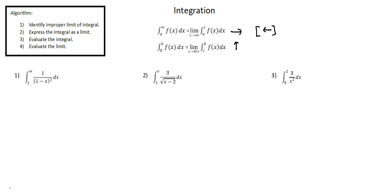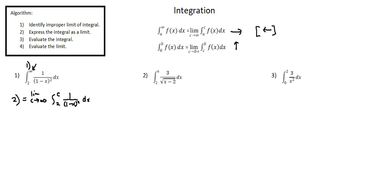Number one: the integral from two to infinity of the function one over quantity one minus x squared, with respect to x. Step one: identify the improper limit of integration — that's the upper limit of infinity. Step two: express the integral as a limit. So now the notation is the limit as c approaches infinity. I'll keep the non-infinity limit of two and change the infinity limit to c, continuing with the function one over one minus x squared with respect to x.